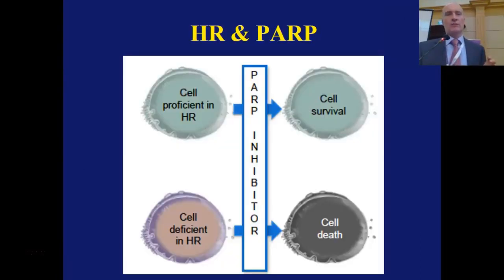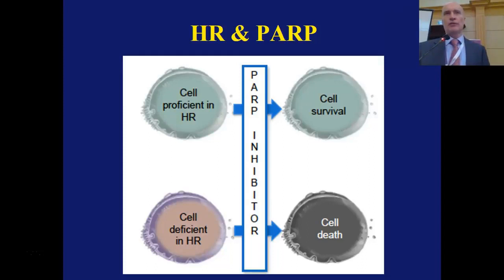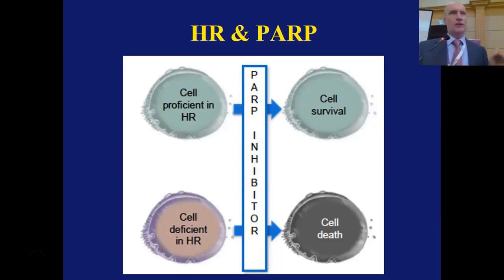If you have a cell that's proficient in repair — high-fidelity repair system intact, base excision repair and homologous repair — and you expose it to a PARP inhibitor, base excision repair is knocked out. But because you're proficient in HR, your cell survives. If you lack that, and expose the cell to a PARP inhibitor, the cell cannot live. That is the therapeutic leverage of PARP inhibitors in cancer cells. If you understand this, you understand why we test for homologous recombination deficiency and why we look at HRD-deficient patients as a separate bucket in clinical trials.